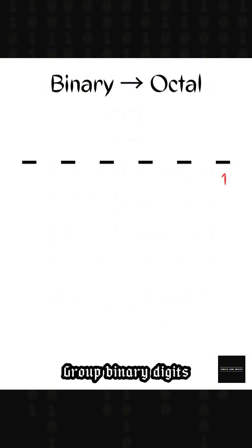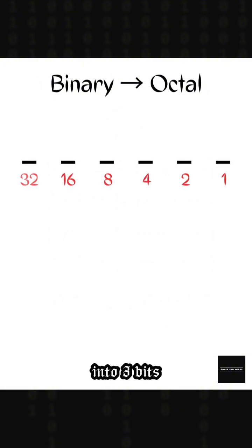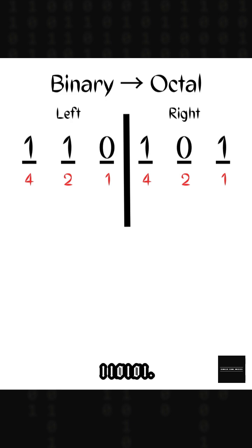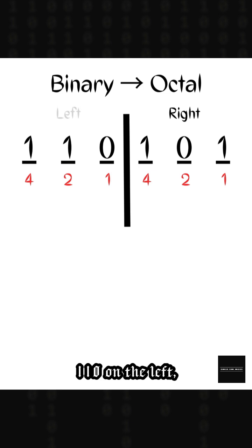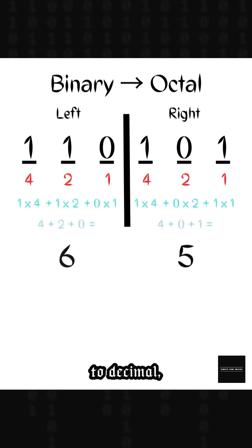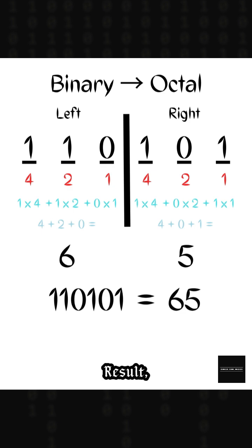Binary to octal. Group binary digits into 3 bits from right to left. Example: 1, 1, 0, 1, 0, 1. Group them: 1, 1, 0 on the left and 1, 0, 1 on the right. Convert each group to decimal: 6 and 5. Result: 65 in octal.